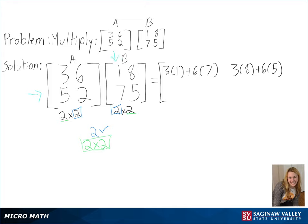Next, we can multiply the bottom row, first by the left column to get 5 times 1 plus 2 times 7, and then by the right column to get 5 times 8 plus 2 times 5.